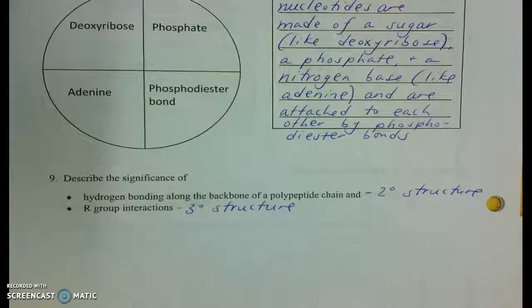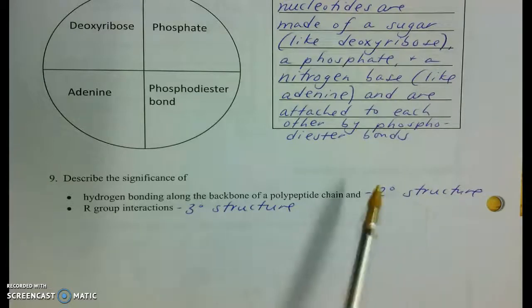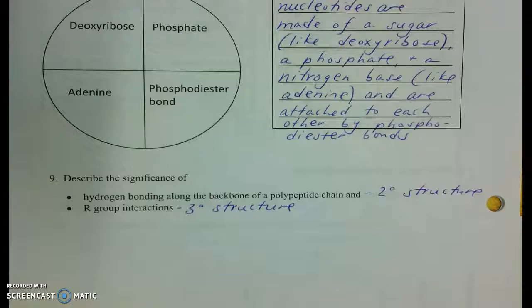So, number nine is thinking about that complex three-dimensional structure that we find in proteins. And we know that their primary structure is stabilized by peptide bonds. And here, we can remind ourselves that their secondary structure is stabilized by hydrogen bonds. And their tertiary structure is stabilized by those R-group interactions. Keep in mind, if we keep multiple subunits together, when we join those, then we're looking at that quaternary structure.